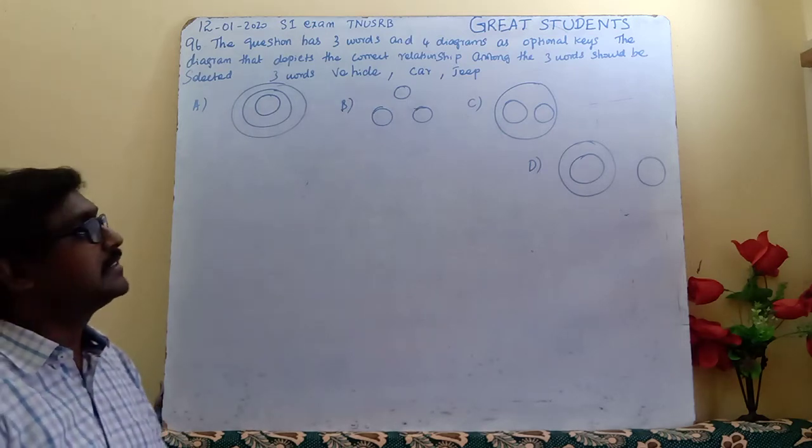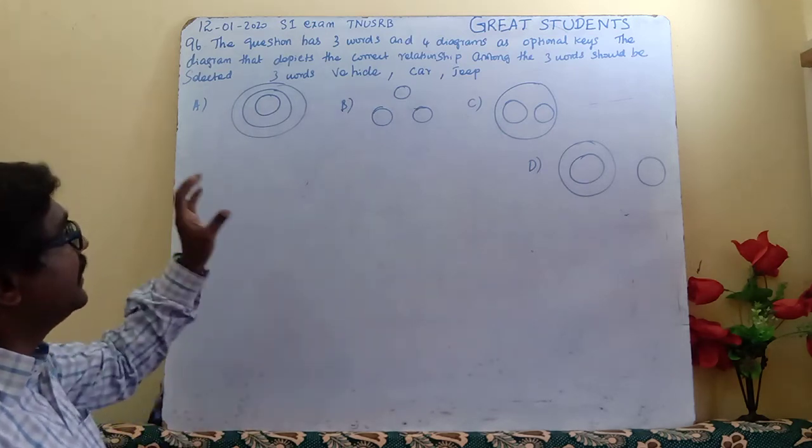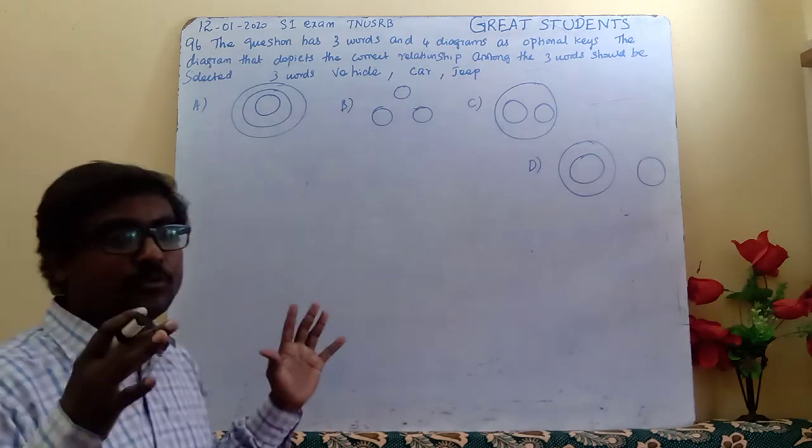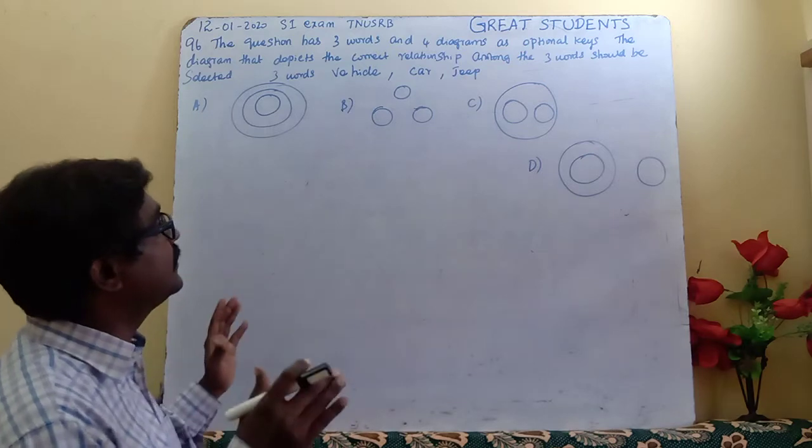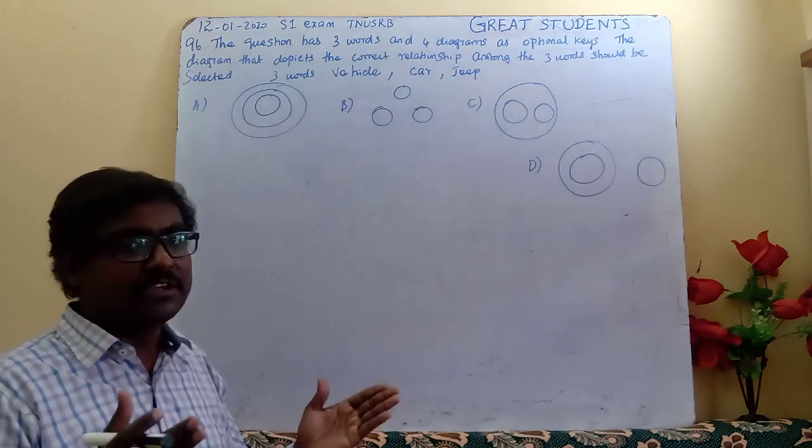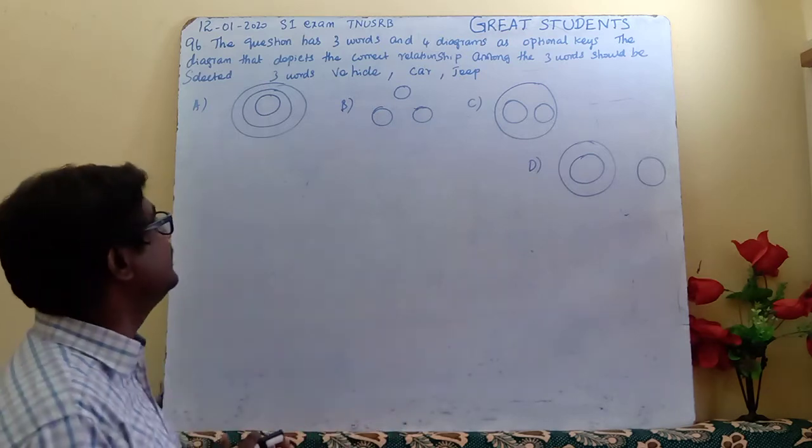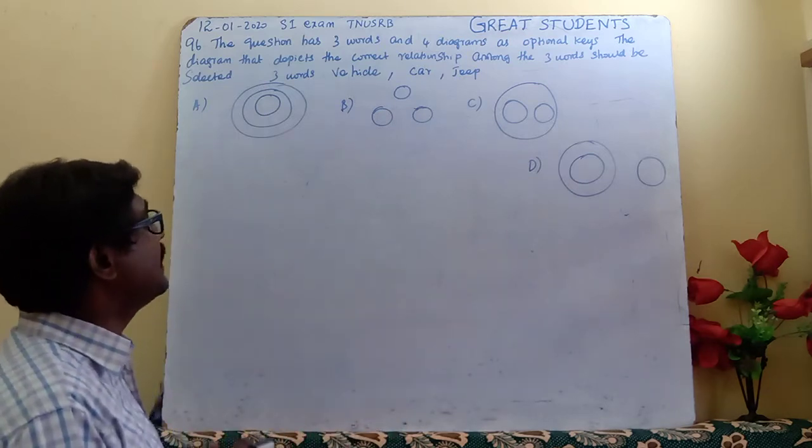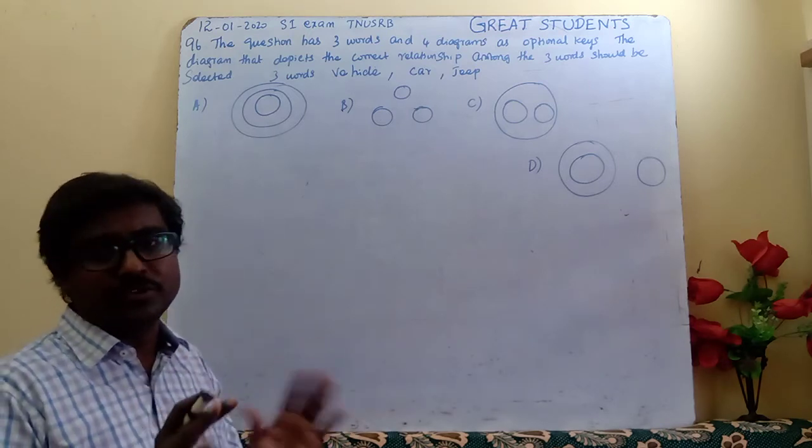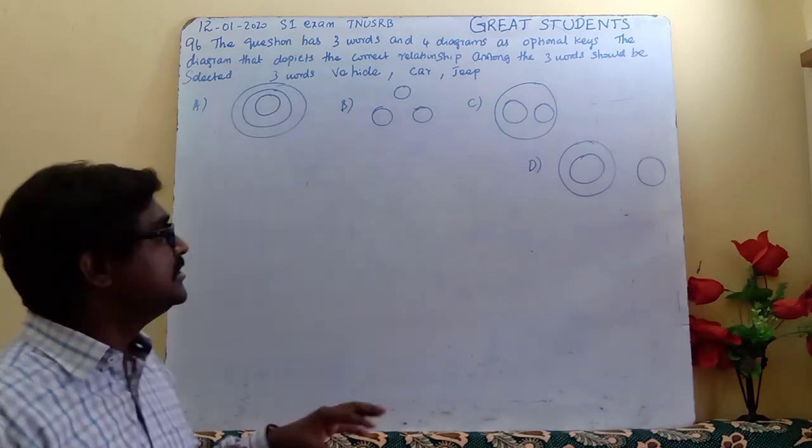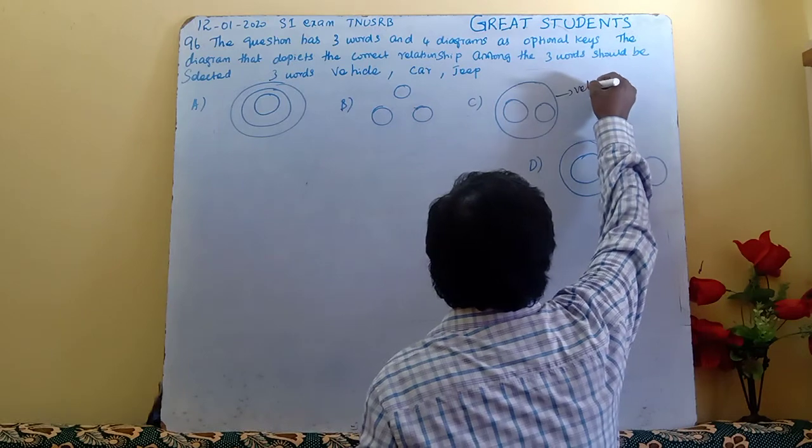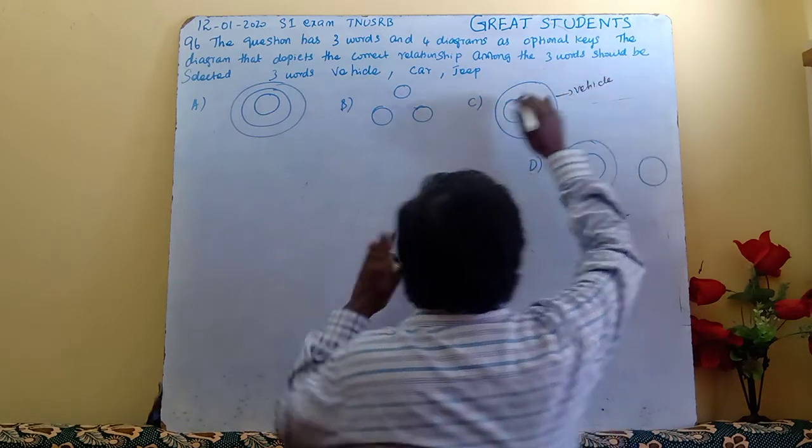In the diagram, the words are vehicle, car, and jeep. Vehicle is a general or moving automatic system. Vehicle is the main one, and car and jeep are subsets. Vehicle is the super classification, and car and jeep are sub-classifications. Car and jeep have different structures, but vehicle encompasses both car and jeep.